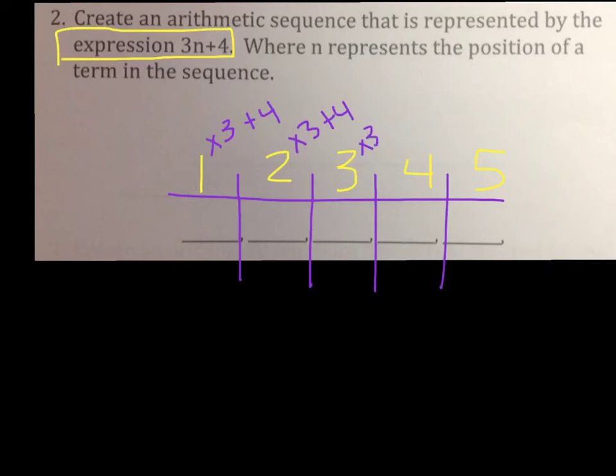And it will not always be 3n, it'll change up and you'll multiply with other numbers as well. So if I want to get the first term in the sequence, I'm going to do one times three plus four. That's seven. Then to get the second term I need to do two times three plus four. How much is that? Ten.